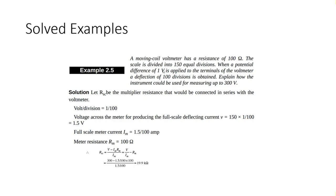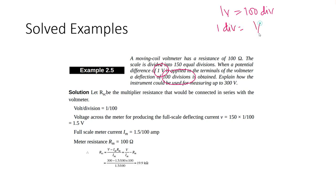In 100 divisions it measures one volt. Volts per division is one divided by 100, which is 0.01 volt per division.